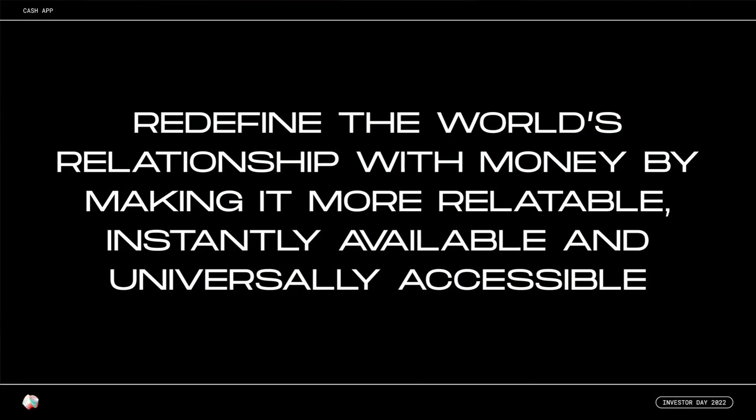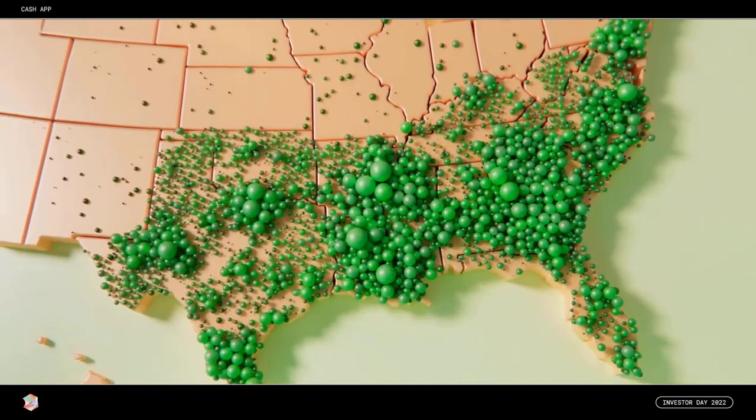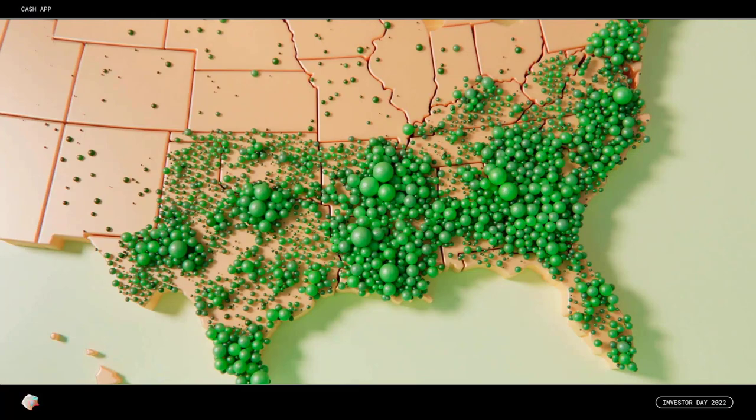If the economy is a machine, then money is the oil that makes it operate efficiently. We realized that the most direct path to driving economic empowerment broadly is by making money work better for people. We set out to redefine the world's relationship with money by making it more relatable, instantly available, and universally accessible. And this has been Cash App's mission ever since. Many of Cash App's early adopters were underserved people in the South, who were digitally native and valued fast access to funds with Instant Deposit. These early adopters started inviting their family and friends just like a social network, and Cash App's network started growing virally throughout the South and up the Eastern Seaboard.